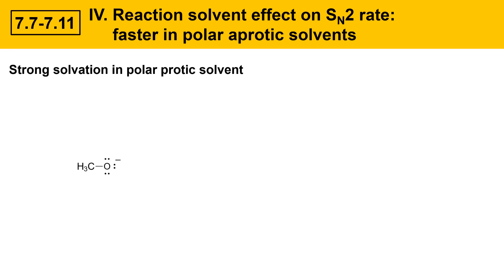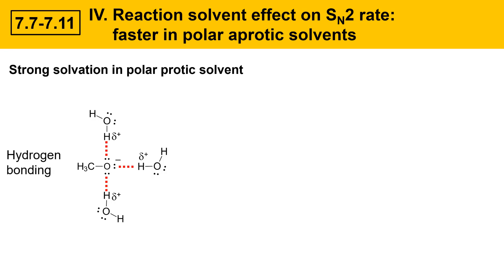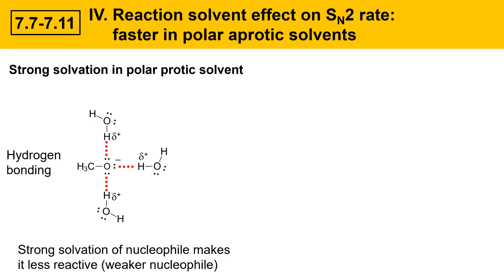For the example nucleophile in the previous slide — methoxide — we're going to look at what happens when a polar protic solvent is added, like water. When water is added, it solvates methoxide very strongly. The partially positive hydrogens of water will associate with the negatively charged oxygen of the methoxide nucleophile and form strong hydrogen bonding interactions, indicated here by the red dotted lines. These are very strong intermolecular force type interactions, and you can think about this methoxide nucleophile as being fairly tightly bundled up. In order for the nucleophile to function as a nucleophile, it needs to shed this strong solvation shell, and that requires a fair bit of energy. So strong solvation of the nucleophile makes it less reactive — a weaker nucleophile.